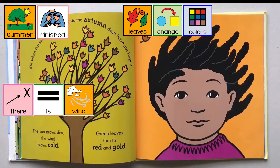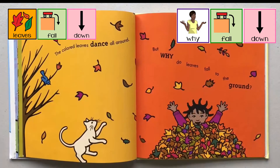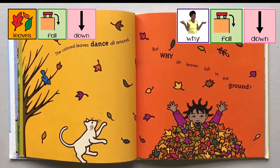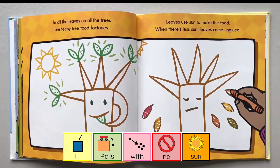But when the summer days are done, the autumn days have just begun. The sun grows dim. The wind blows cold. Green leaves turn to red and gold. The season autumn is also called fall in some countries. The colored leaves dance all around. But why do leaves fall to the ground? In all the leaves on all the trees are teeny tree food factories. Leaves use sun to make the food. When there's less sun, leaves come unglued.